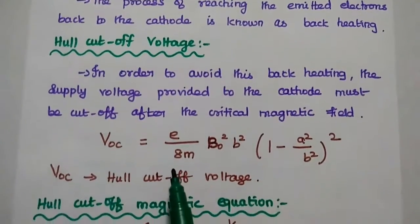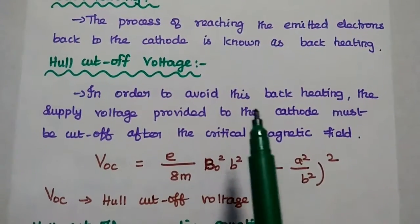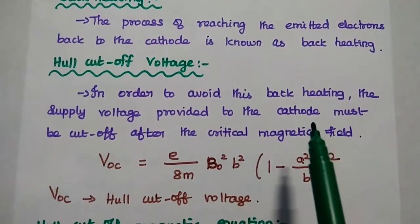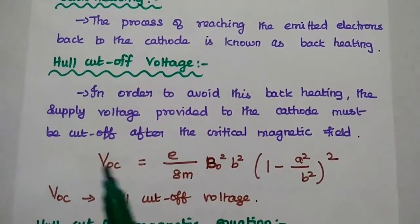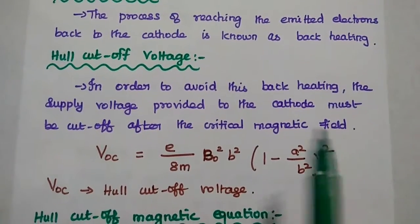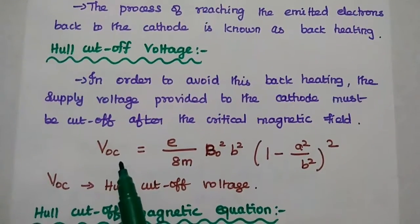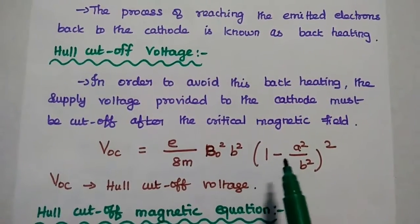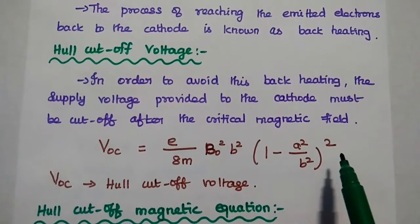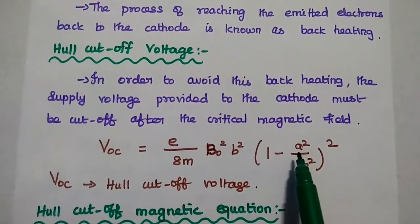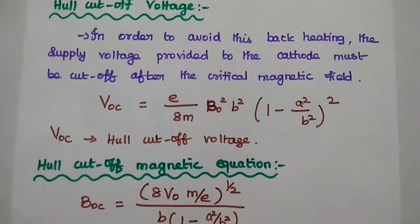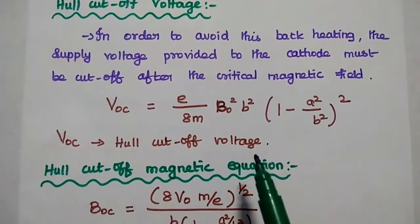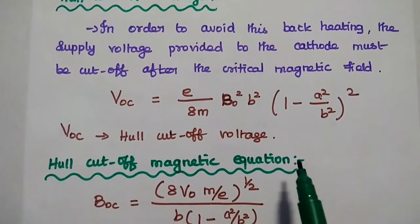Next is the hull cutoff voltage. In order to avoid back heating, the supply voltage provided to the anode and cathode must be cut off after the critical magnetic field is reached. It is denoted as V_OC, which equals (e/8m) × B² × (1 - A²/B²)², where A is the radius of the cathode and B is the radius of the anode. The hull cutoff voltage is mainly used to avoid the back heating process.